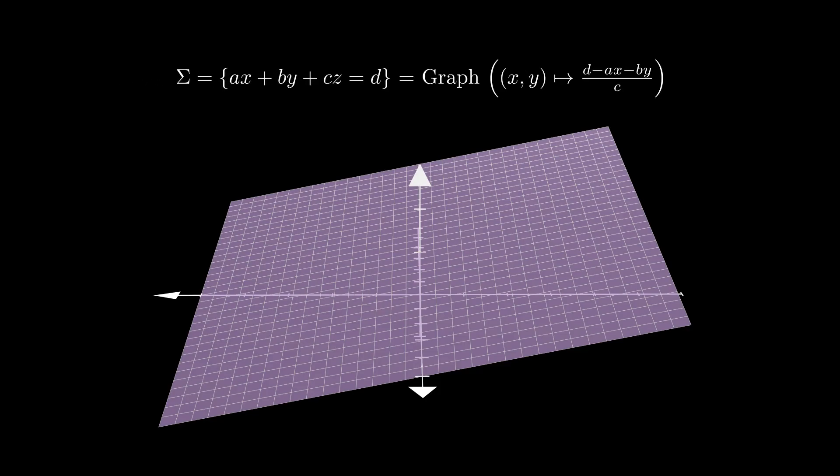If c is zero, then at least one of a or b is not zero, and we can use another coordinate system in a similar way to describe sigma as the graph of a smooth function.